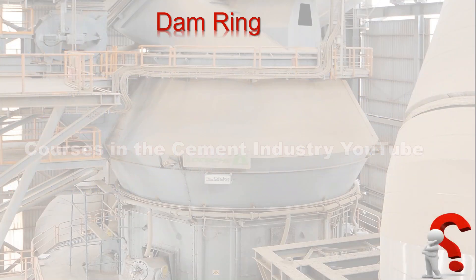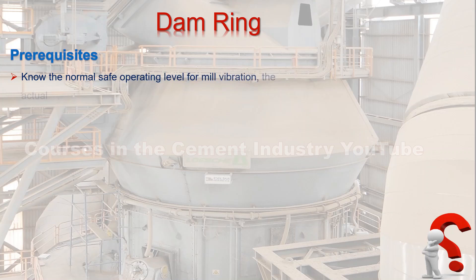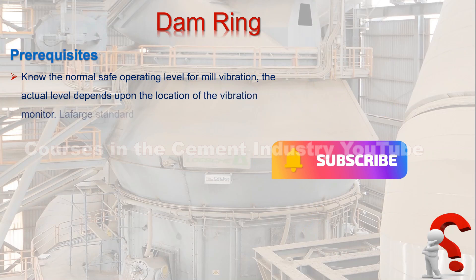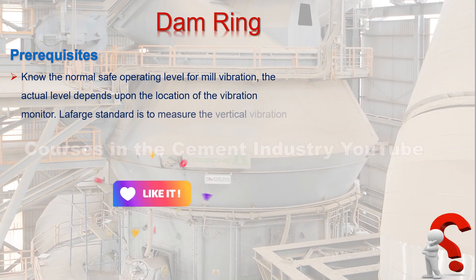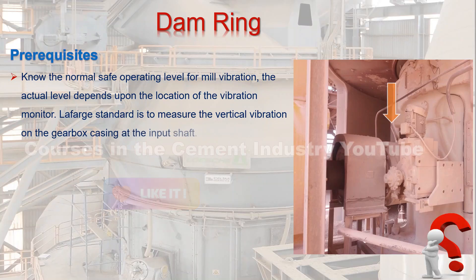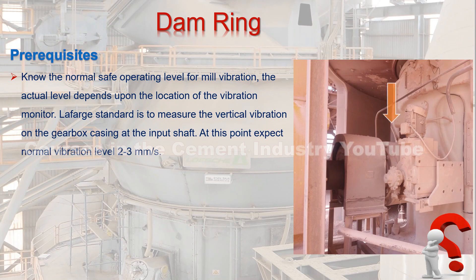Know the normal safe operating level for mill vibration. The actual level depends upon the location of the vibration monitor. The Lafarge standard is to measure the vertical vibration on the gearbox casing at the input shaft. At this point, expect a normal vibration level of 2 or 3 millimeters per second.